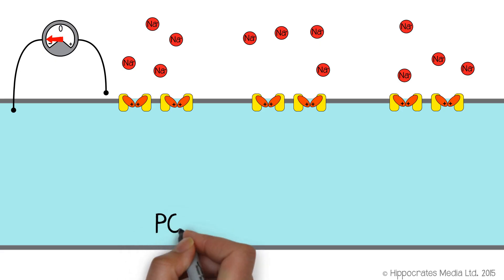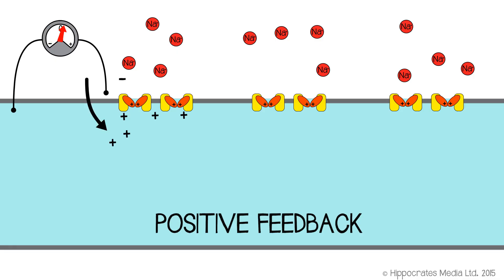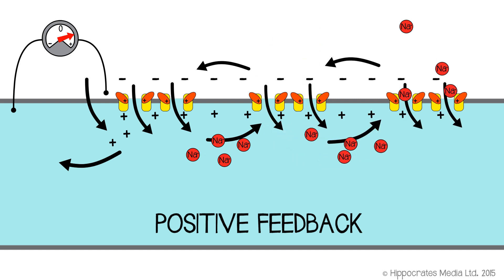Now this gives us a process called positive feedback, because what we're saying is if we make the interior of the cell slightly more positive, that causes voltage-gated channels to open, that allows more sodium to come into the cell, that will make the interior even more positive, and that will cause more voltage-gated sodium channels to open. So more sodium comes in, so it becomes more positive, so more channels open. It's positive feedback. It's like a vicious cycle.